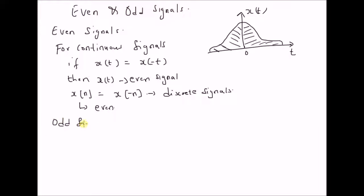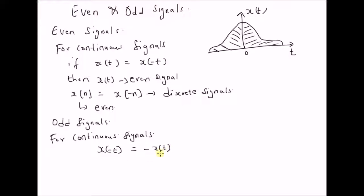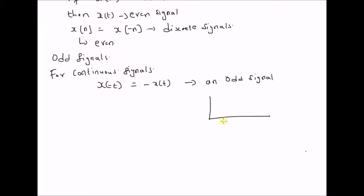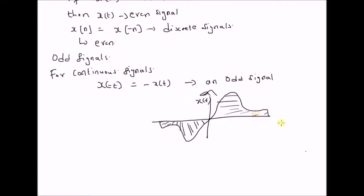Now, let us look at odd signals. In this case, x of t is an odd signal. Here the value is always equal to the negative of the values on the left side of t equal to 0. For discrete signals, x of n is equal to minus x of n. This is an odd discrete signal.